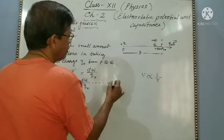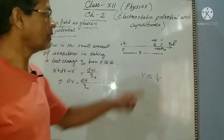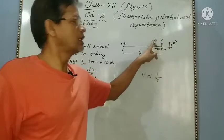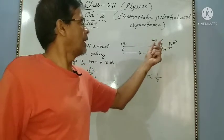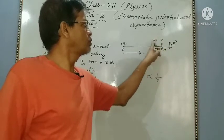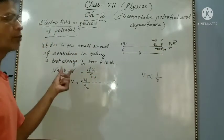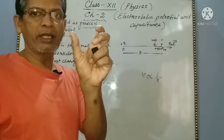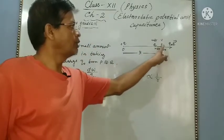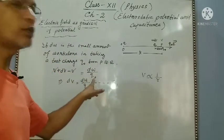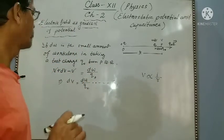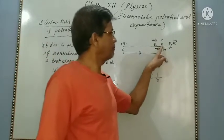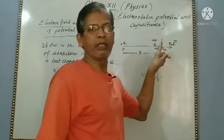So from this we get dV equal to dW by Q naught. This is relation one. At point P the potential is V, at point Q the potential is V plus dV, and the potential difference equals work done divided by the test charge Q naught.